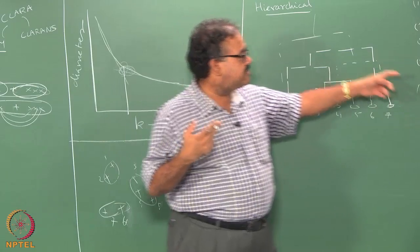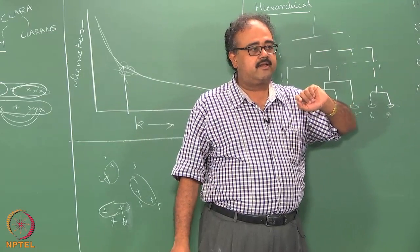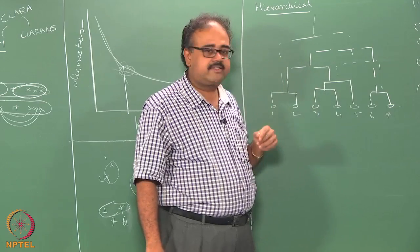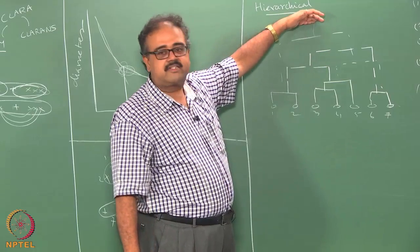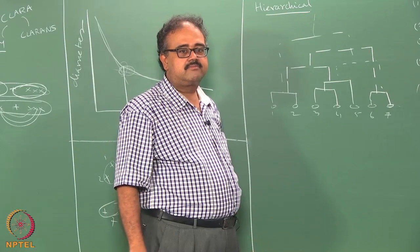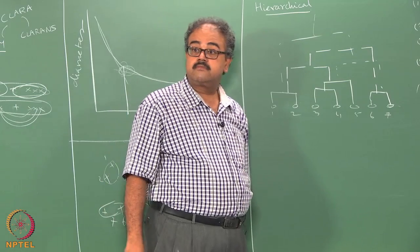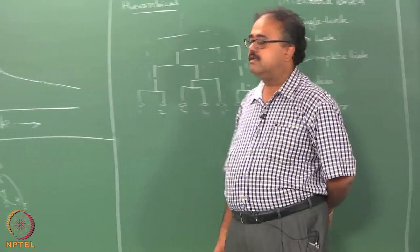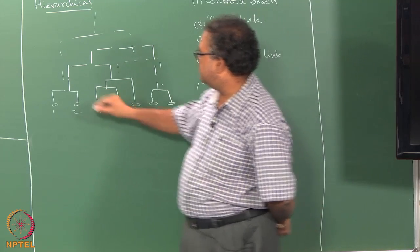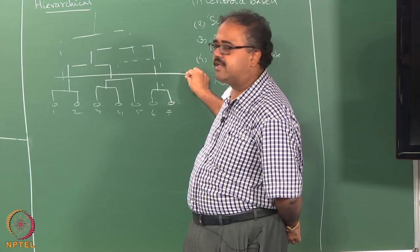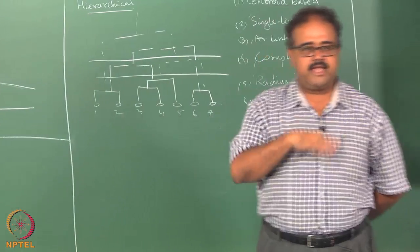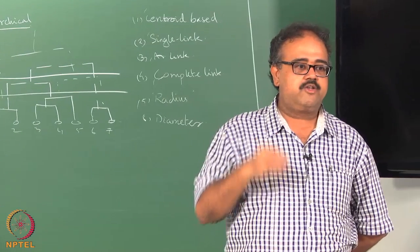Once I have a tree like this, notice that I didn't have to choose k here. Once I have the tree, how do I recover clusters? When I completed my clustering I was left with one cluster. So I have to figure out some point to break the tree. If I break here I end up with three clusters; if I break here I end up with two clusters. I can choose to break at some point in between and take that many clusters.